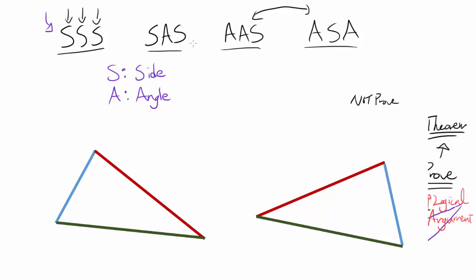The SAS postulate is telling you: if there is one side that's congruent, another side that's congruent, and the angle in between them — notice how A is in between the two S's — so if the angle between the two sides is congruent, then the triangles themselves are congruent. That's SAS.